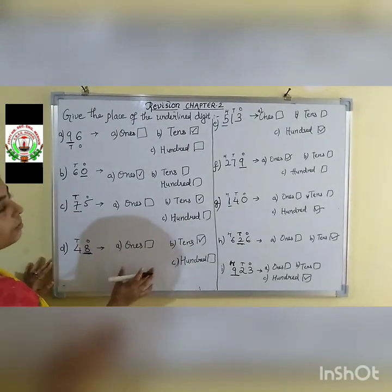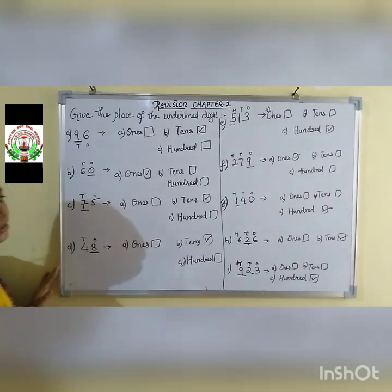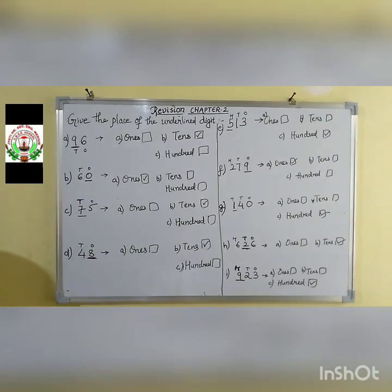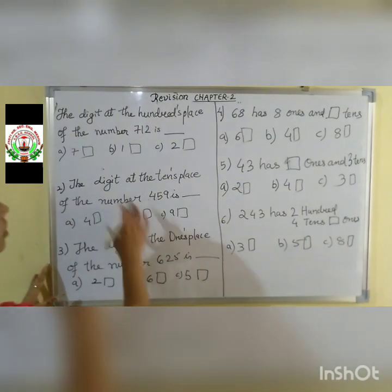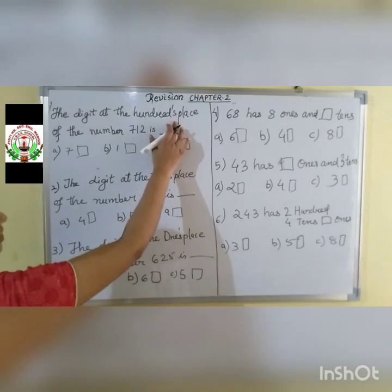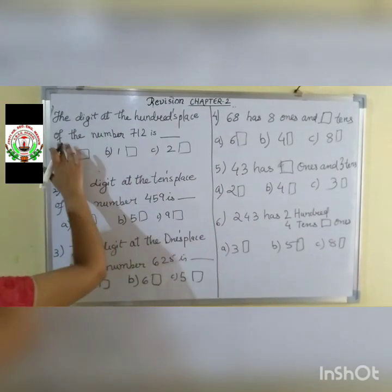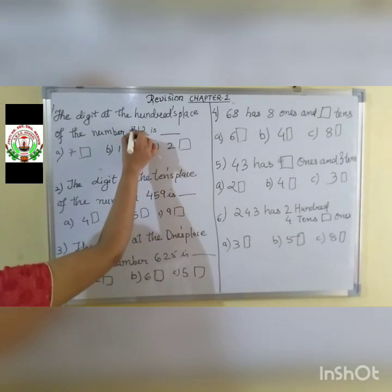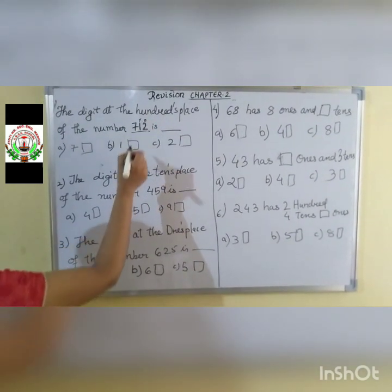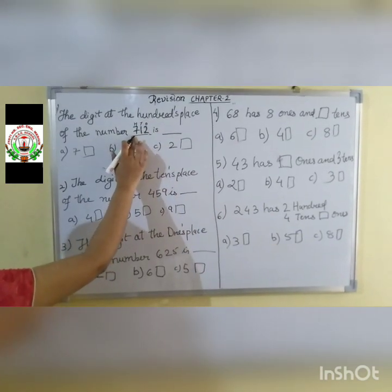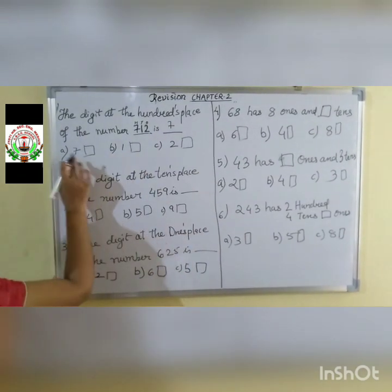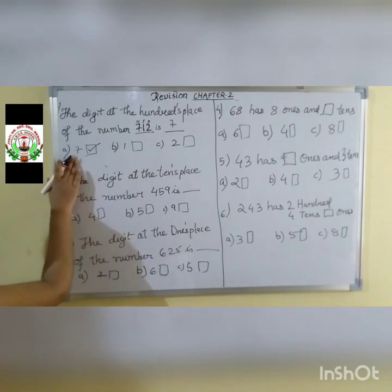In this way, you have to solve questions of place value and underlined digits. Children, here are some more place value questions. The digit at the 100s place of the number 712 — 2 is in the 1s place, 1 is in the 10s place, and 7 is in the 100s place. So the answer is 7, given in option A. Put a tick mark on A.